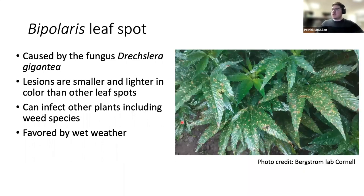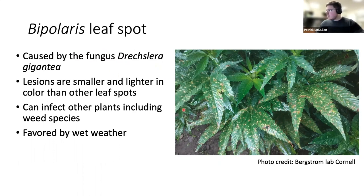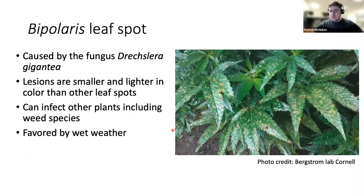Another common leaf spot is bipolaris leaf spot, caused by the fungus Bipolaris gigantea — though fungal taxonomy is ever-changing. The lesions from bipolaris are much smaller than those of Septoria, and they usually have a yellow color. These can infect other plants including weed species, so weed control is very important to prevent harboring pathogens. Like many fungal pathogens, bipolaris is favored by wet weather.